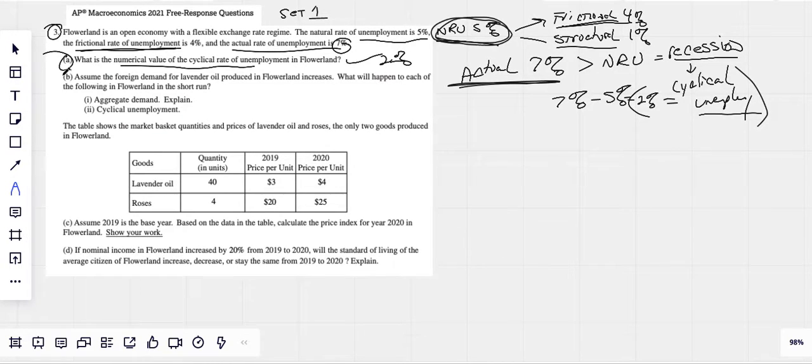Assume the foreign demand for lavender oil produced in Flowerland increases. What will happen to each of the following in the short run? Well, if more foreigners are buying our lavender oil, that implies that exports are increasing. If exports are going up, we know aggregate demand's going up. I think that's about as straightforward as you can get. But cyclical unemployment would obviously decrease, right?